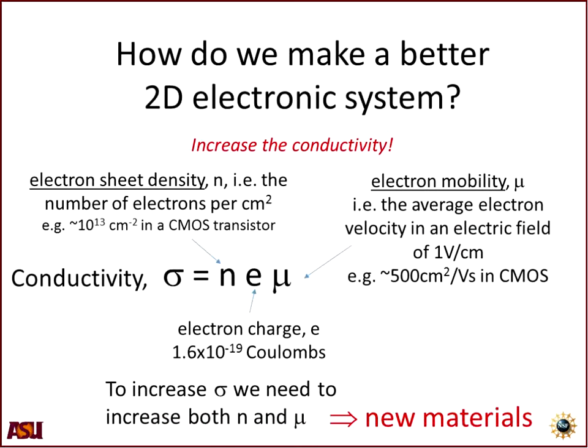The width of the electronic charge in that sheet is only about 10 nanometers. Although the current can flow easily within the sheet, it's almost impossible for current to flow perpendicular and leave the transistor through the gate — that requires quantum mechanical tunneling. So we really do have a two-dimensional sheet of charge — our two-dimensional electronic system. The question is: how do we make a better one?